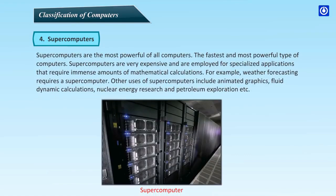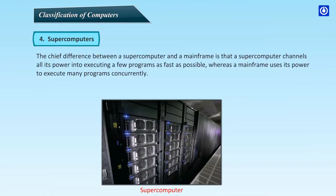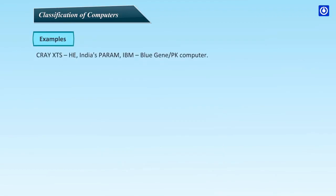Supercomputers are the most powerful of all computers — the fastest and most powerful type. They are very expensive and are employed for specialized applications requiring immense amounts of mathematical calculations, such as weather forecasting. Other uses include animated graphics, flow dynamic calculations, nuclear energy research, and petroleum exploration. The chief difference between a supercomputer and a mainframe is that a supercomputer channels all its power into executing a few programs as fast as possible, whereas a mainframe uses its power to execute many programs concurrently. Examples: Cray XDS-HE, India's Param, IBM BlueGene, PK Computer.